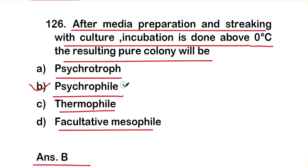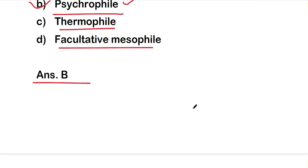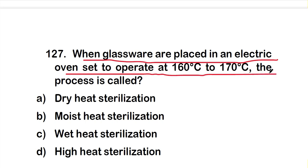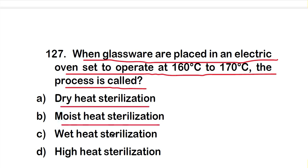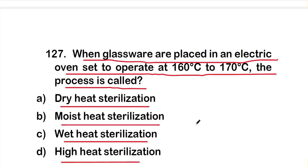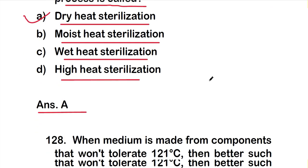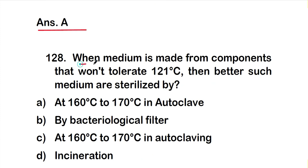Question number 127: When glassware is placed in an electric oven set to operate at 160°C to 170°C, the process of sterilization is called Option A: dry heat sterilization, Option B: moist heat sterilization, Option C: wet heat sterilization, or Option D: high heat sterilization. The right answer is Option A — dry heat sterilization.